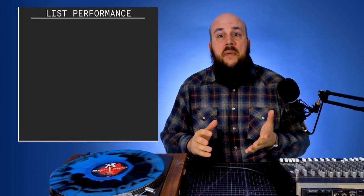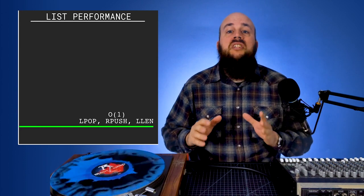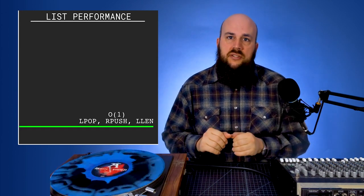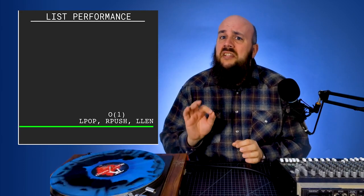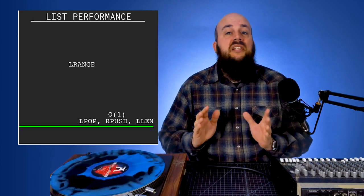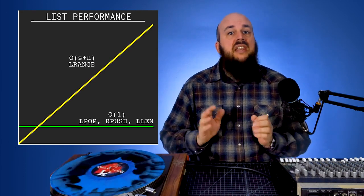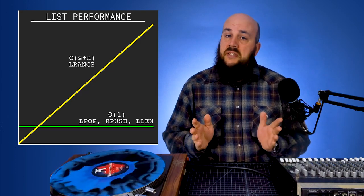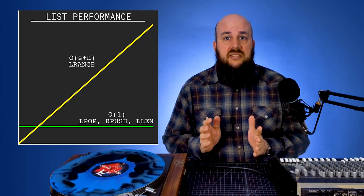Let's talk about the performance of the various list commands we've covered. LPOP, RPUSH, and LLEN are all O(1) constant time complexity operations, so performance isn't dependent on the length of the list — constant time complexity is as efficient as it gets. LRANGE is O(S+N), where S is the distance of the start offset from the head and N is the number of elements in the specified range. You need to be careful with LRANGE, especially when dealing with extra long lists or when retrieving thousands or more elements.